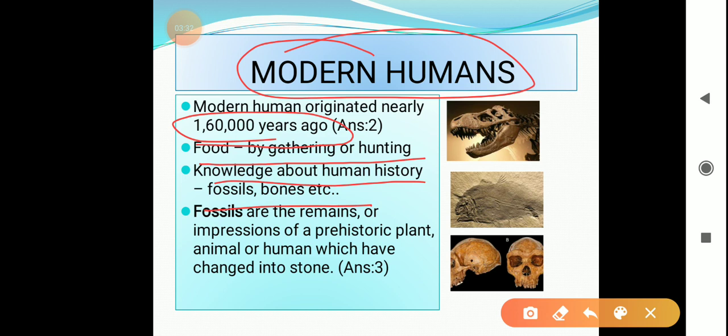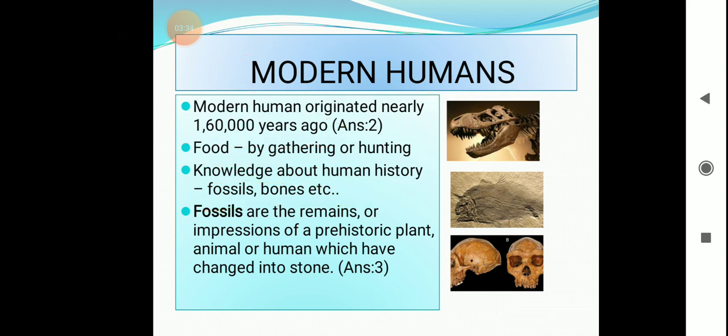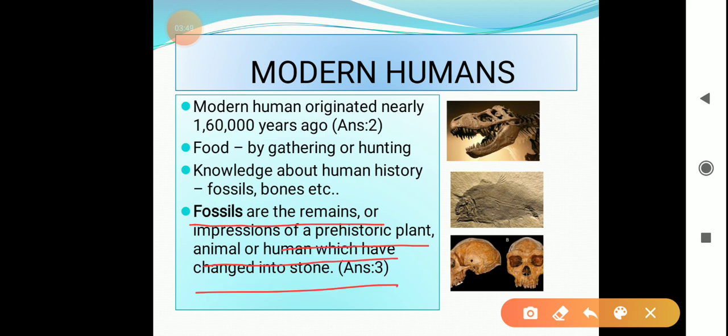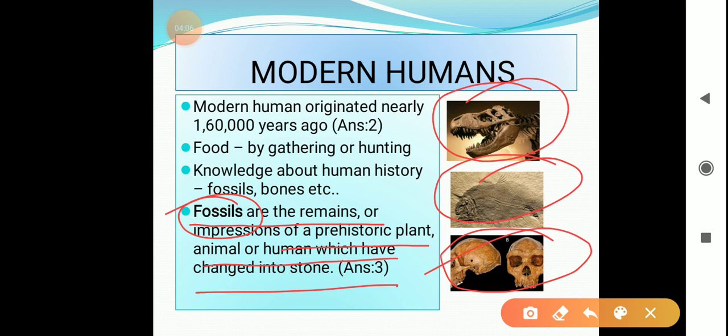Now you may think what is fossil. Fossils are the remains or impressions of a prehistoric plant, animal or human which have changed into stone. In simple words, we can say that fossils are the remains or impressions of a dead animal or human.